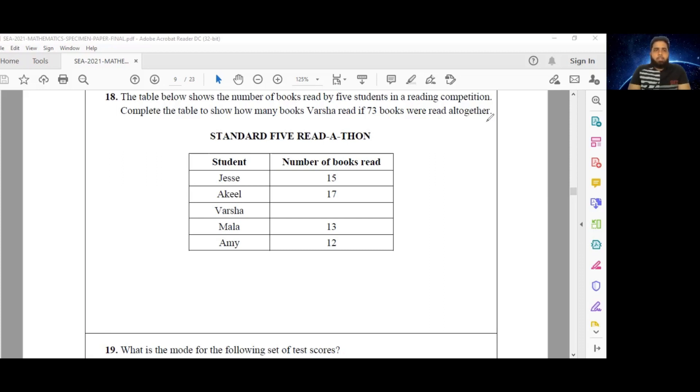So number 18, the table below shows the number of books read by five students in a reading competition. Complete the table to show how many books Basha read, 73 books were read all together. Okay, so this is quite a simple question, actually. So 73 books were read all together by five students in a reading competition, we have Jesse, Akil, Basha, Mala, and Amy, and we know the number of books read by four out of the five students.